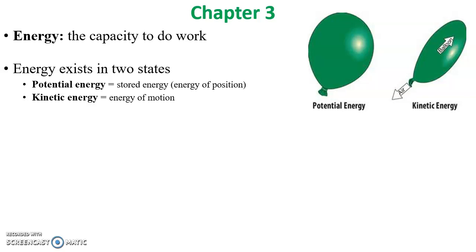Energy exists in two main states: potential energy and kinetic energy. Potential energy is stored energy where the ability to do work is fixing to happen but isn't happening yet—stored energy. For example, a balloon filled with air is fixing to release that air, but not yet.